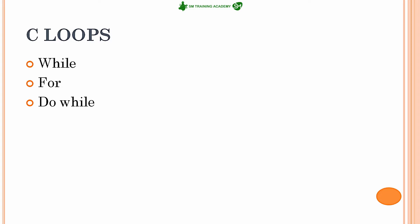The different kinds of loops available in C language are while loop, do while loop, and for loop. Let us understand in detail about these three loops one by one.